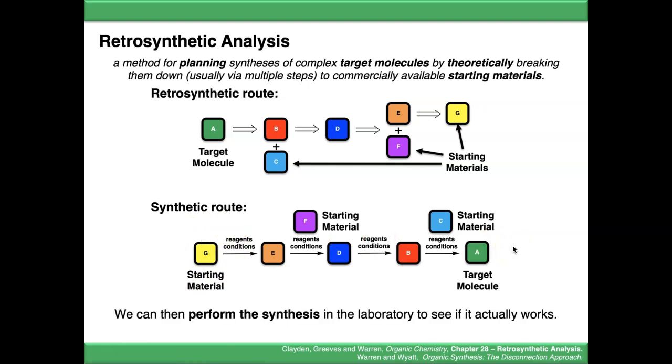What you would then do is go into the lab and see if the synthetic route you've planned actually works. If not, you can always go back and replan your retrosynthetic route. You can change the steps that didn't work, swap steps around. That's part of the strategy of synthetic chemistry.